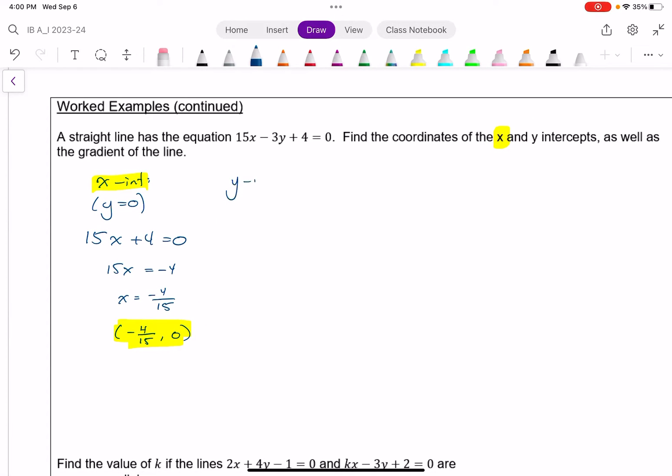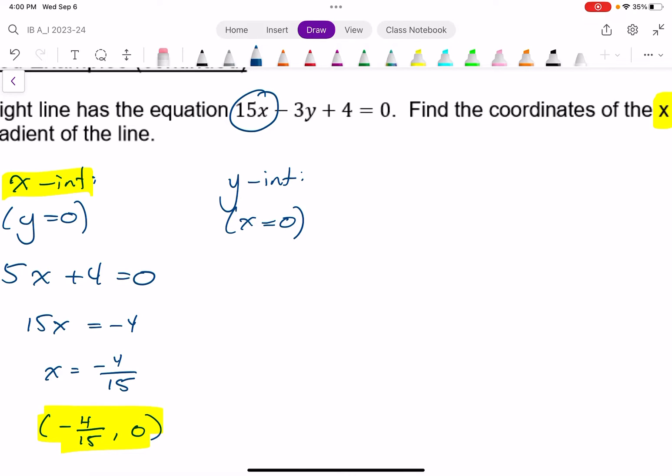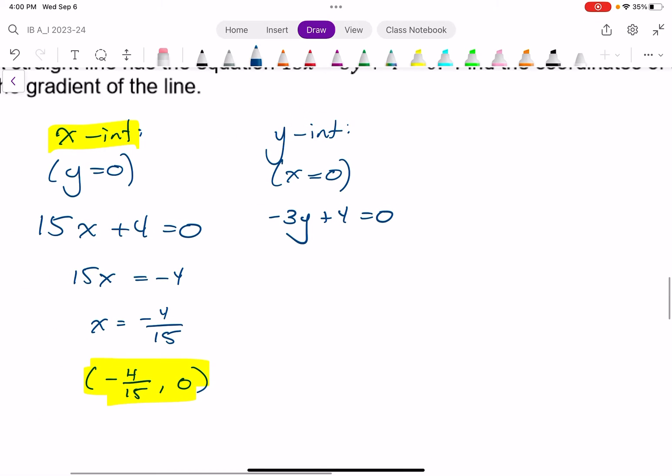Similarly, if I want to find the y intercept, I want to make my x coordinate equal 0. And if I look right here, if I make that x equal 0, I have 15 times 0, which means, once again, that term essentially I can ignore. It becomes 0. And so this equation becomes just minus 3y plus 4 equals 0. And so we quickly get minus 3y equals negative 4. Divide both sides by negative 3. y equals 4 thirds positive, right? Because when you divide both sides by negative 3, I have a negative divided by a negative on the right-hand side. And written as a coordinate, my y intercept is 0 comma 4 thirds.